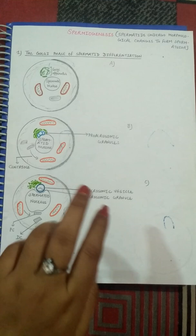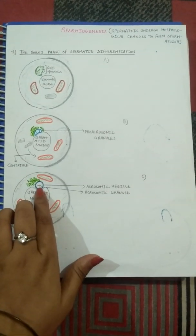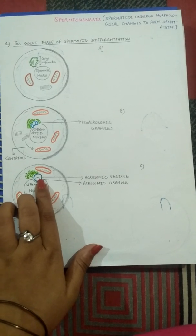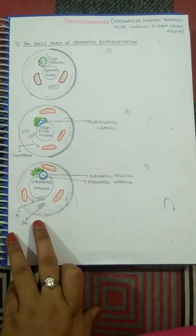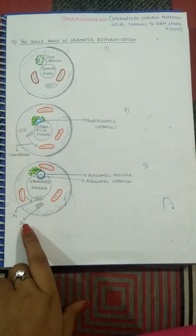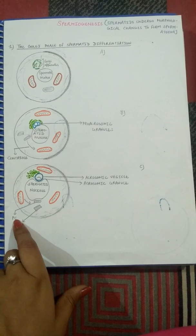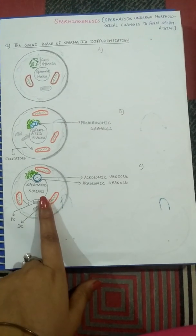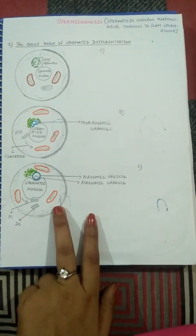In the third stage of the Golgi phase, when many small vesicles continue to fuse with the spermatid nucleus, they form larger acrosomic granules. Inside the acrosomic vesicle there is a dense middle portion — the acrosomic granules — containing many acrosomal contents. The distal centriole helps in the formation of the axoneme or flagella in the tail, while the proximal centriole helps in attaching the tail to the middle piece of the spermatid head.